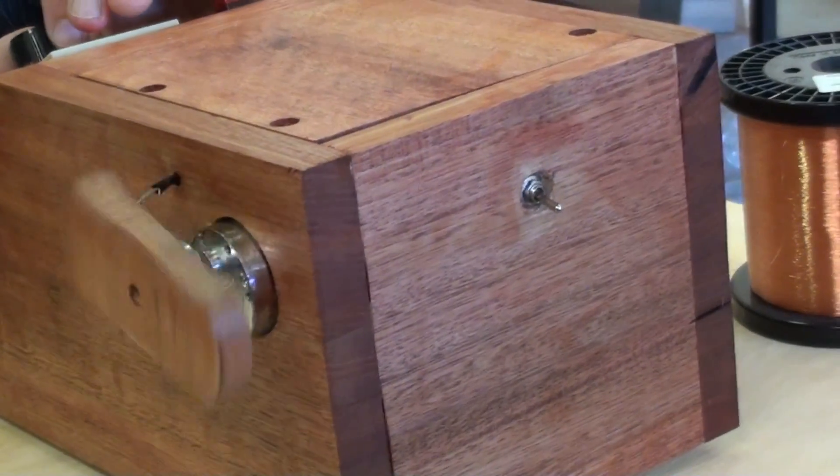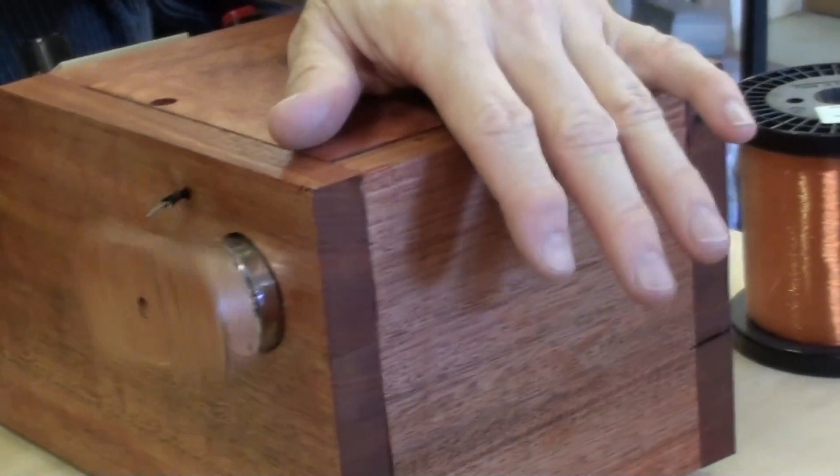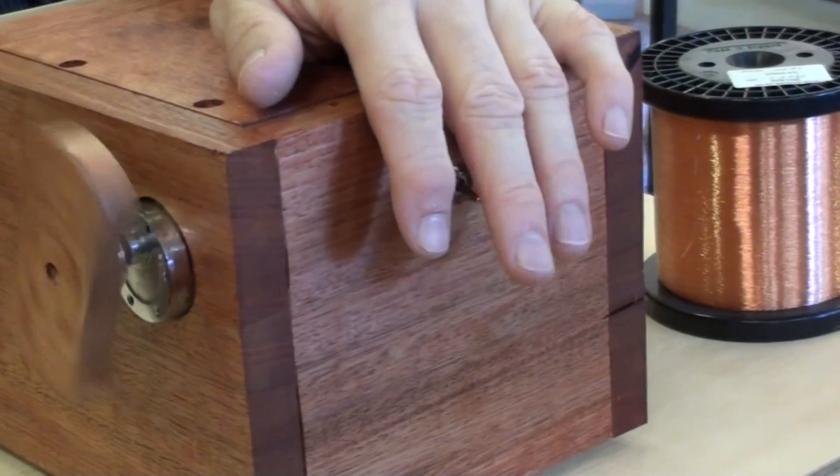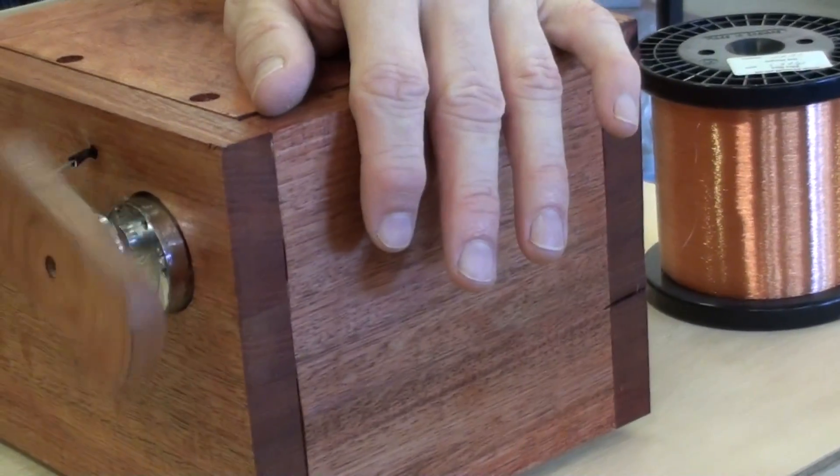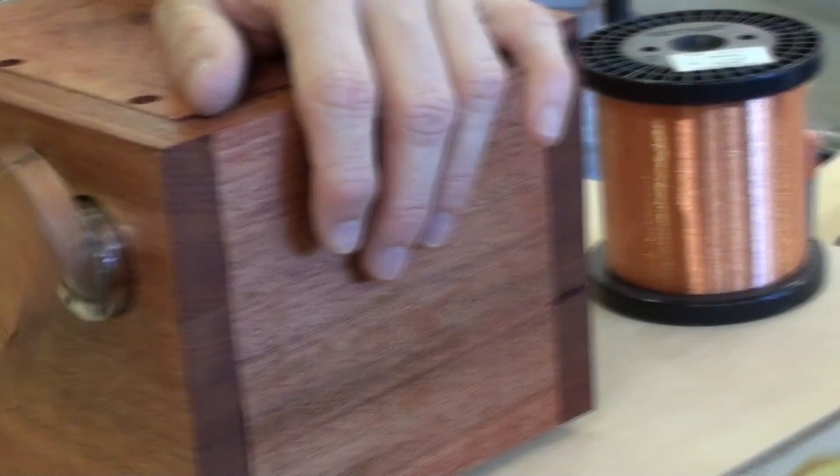Now it's going in an anti-clockwise direction so when you're building a humbucker you will want to build the one coil with a clockwise direction and the second one in an anti-clockwise direction.